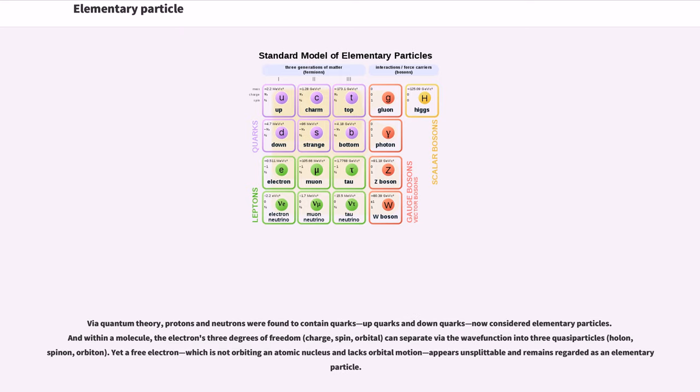Via quantum theory, protons and neutrons were found to contain quarks—up quarks and down quarks—now considered elementary particles. Within a molecule, the electron's three degrees of freedom (charge, spin, orbital) can separate via the wave function into three quasiparticles: holon, spinon, orbiton. Yet a free electron, which is not orbiting an atomic nucleus and lacks orbital motion, appears unsplittable and remains regarded as an elementary particle.